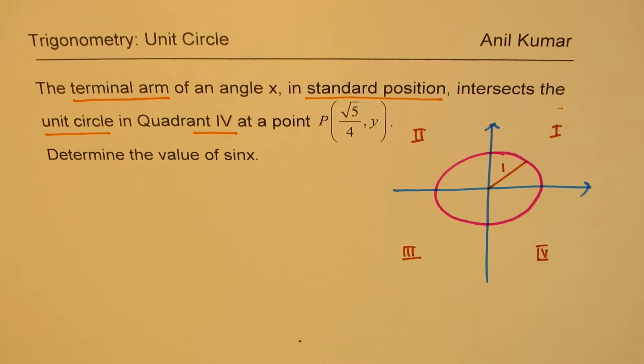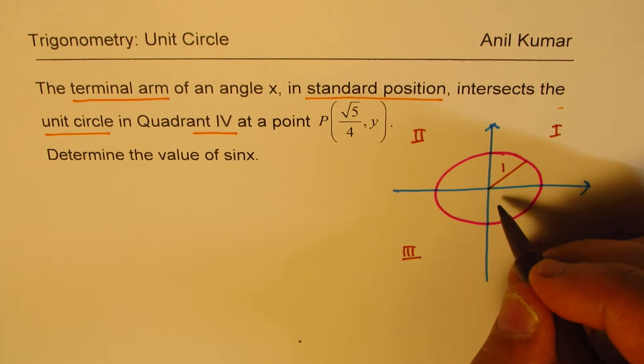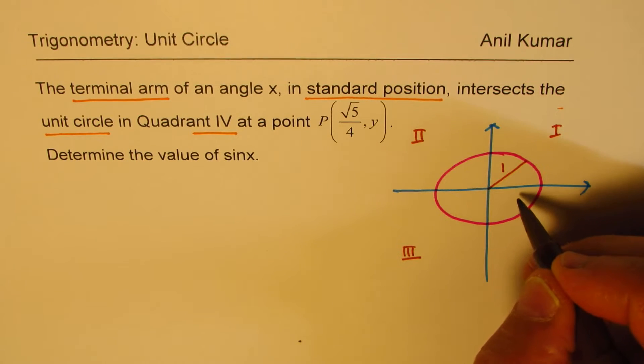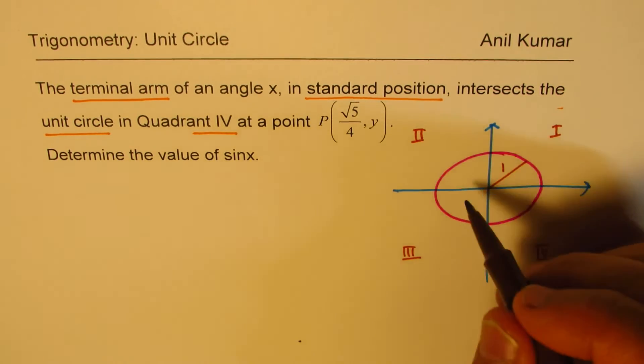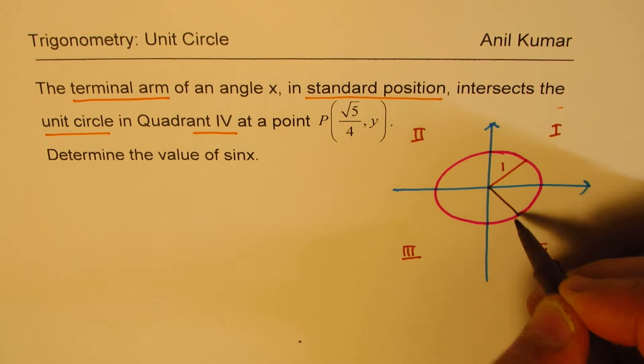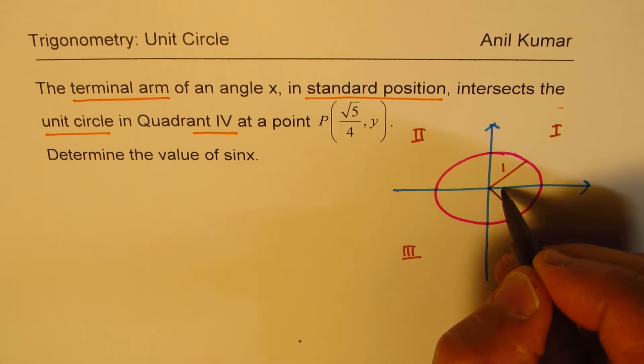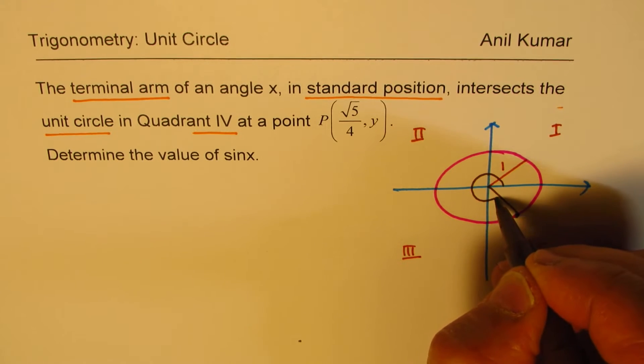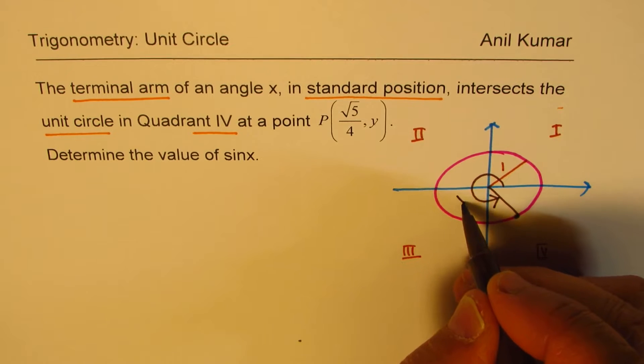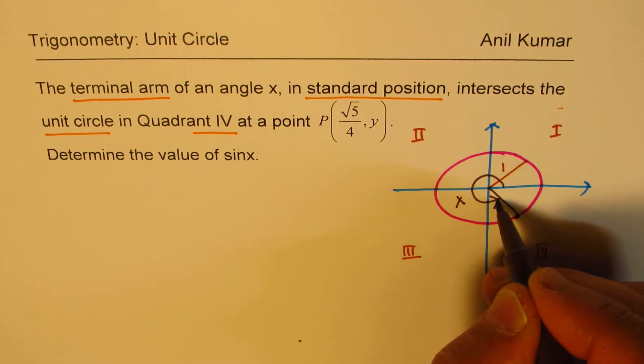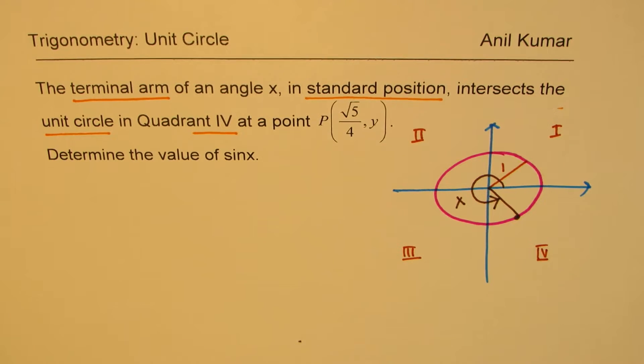Now the terminal arm intersects at quadrant 4. That means the terminal arm is somewhere here. Let's not bother about the value for the time being. So the value of X is this value. Standard position means you have to always go counterclockwise to get the value of X. That is the value of X.